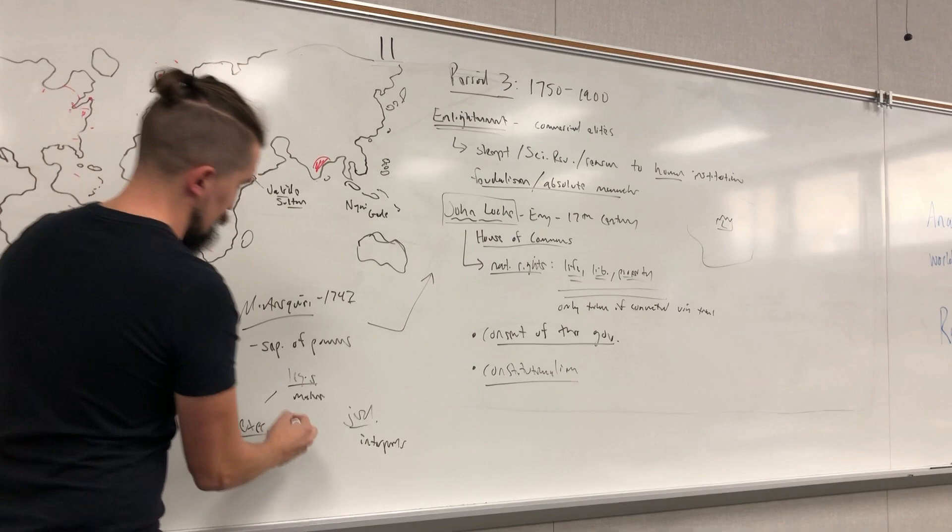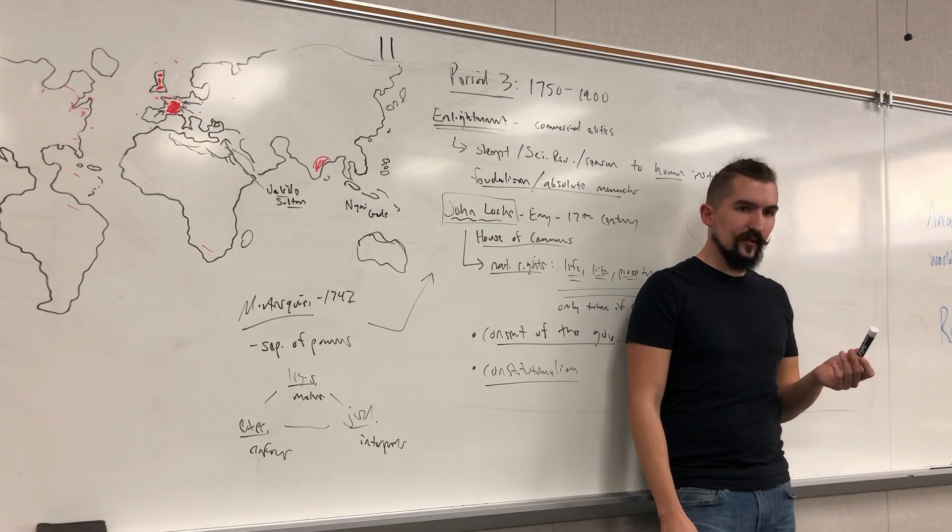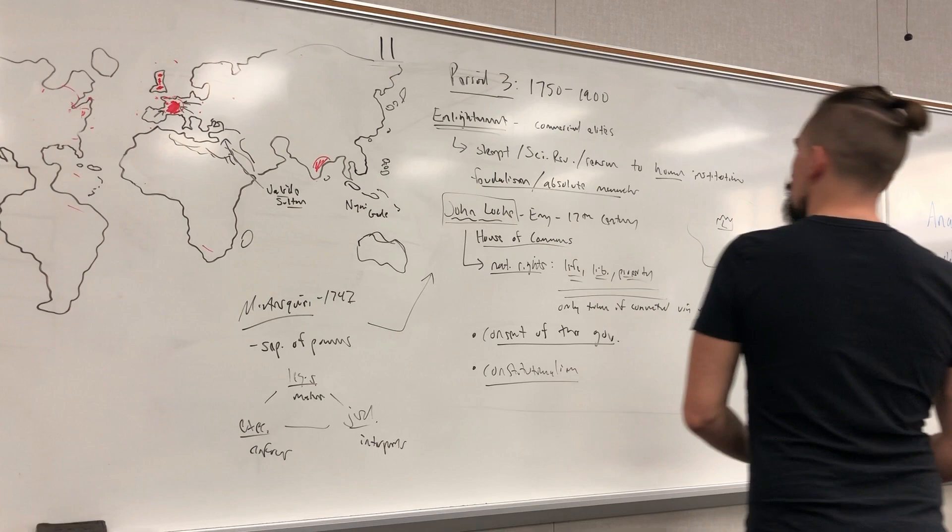Those are the three branches of government. The United States goes a step further by creating ways for each branch to stop the others if they abuse their power — the system of checks and balances.